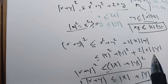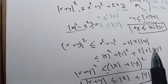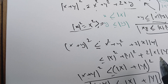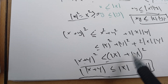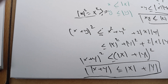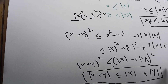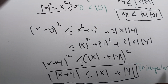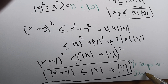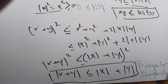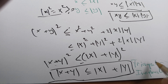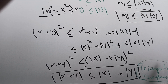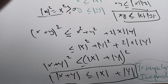You can verify this with examples — try x equals 3, y equals minus 2, or any values you like, and you will always see this inequality holds. This is called the triangle inequality. Remember this one — you will see it everywhere in proofs. That ends our video.